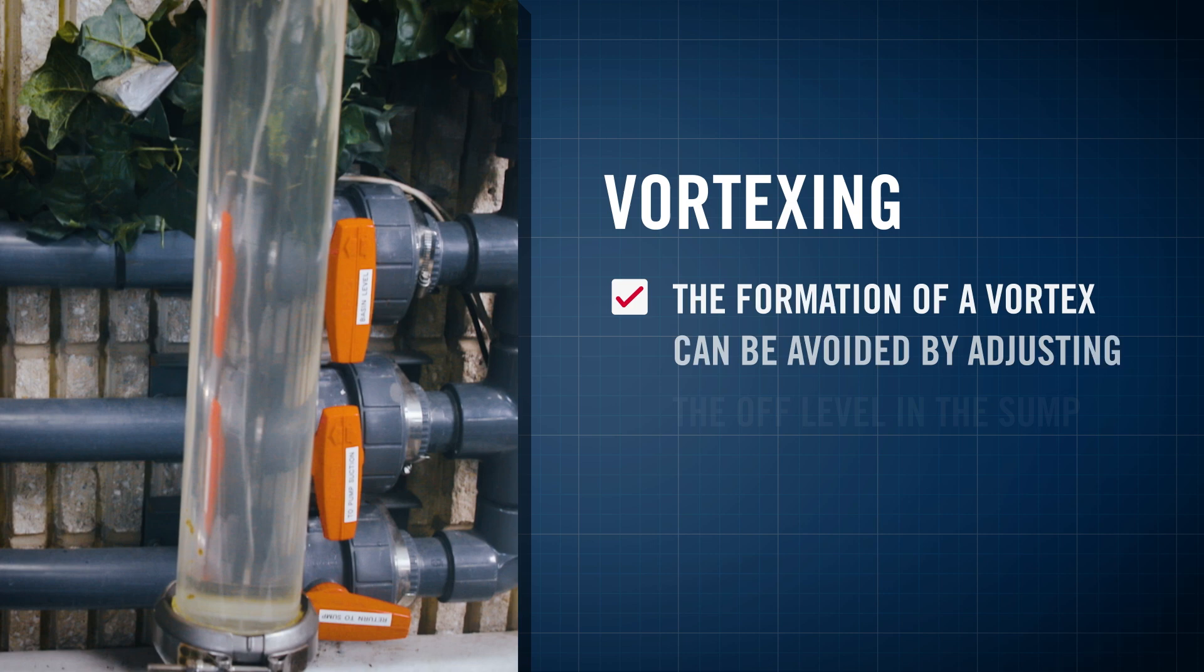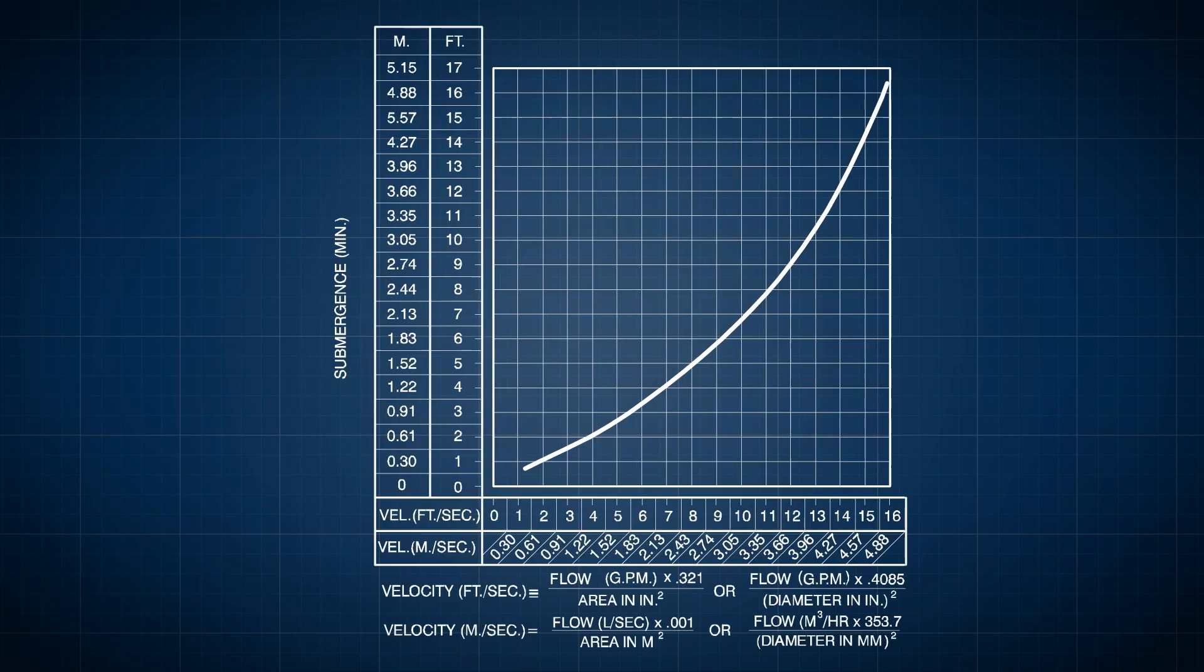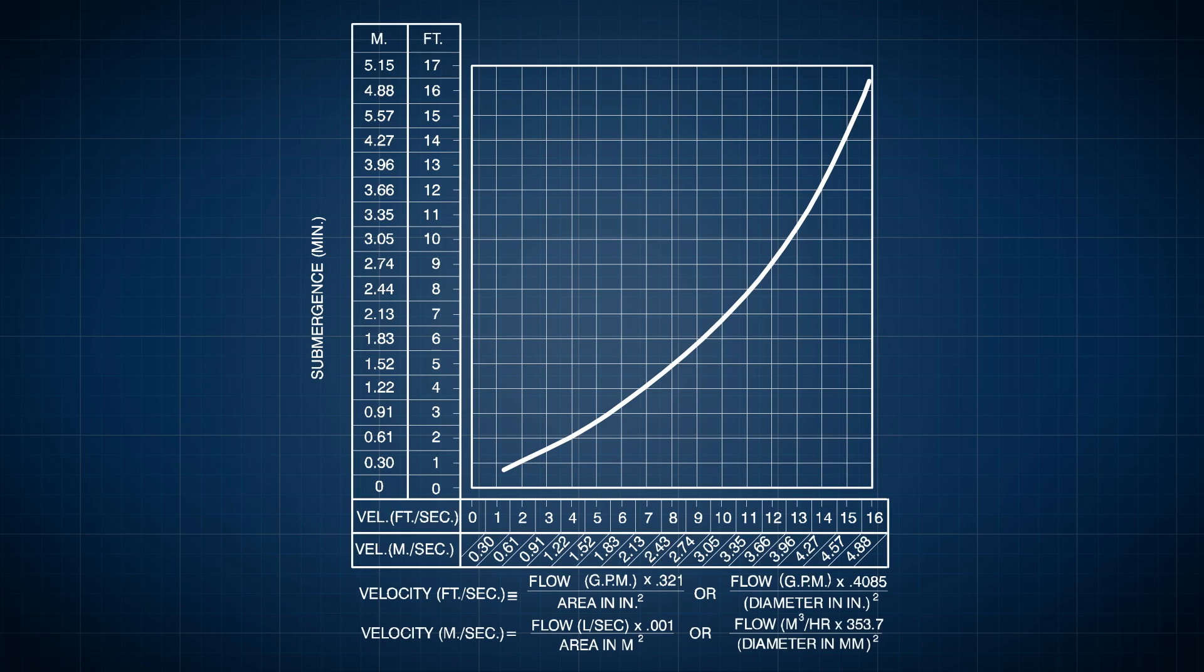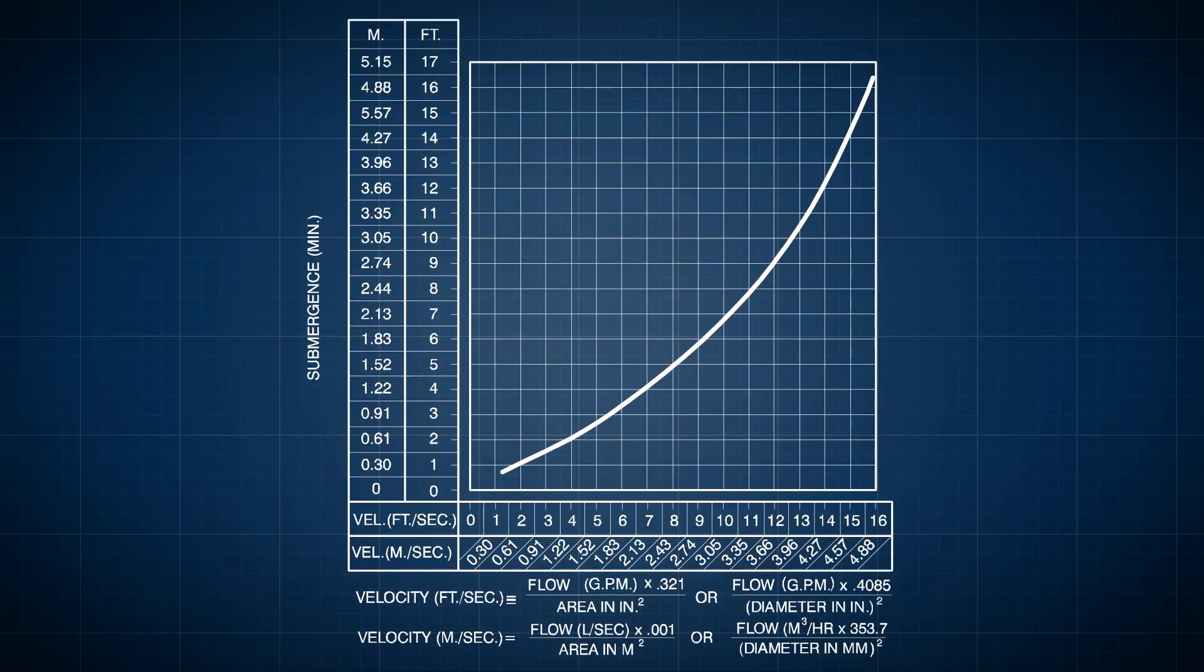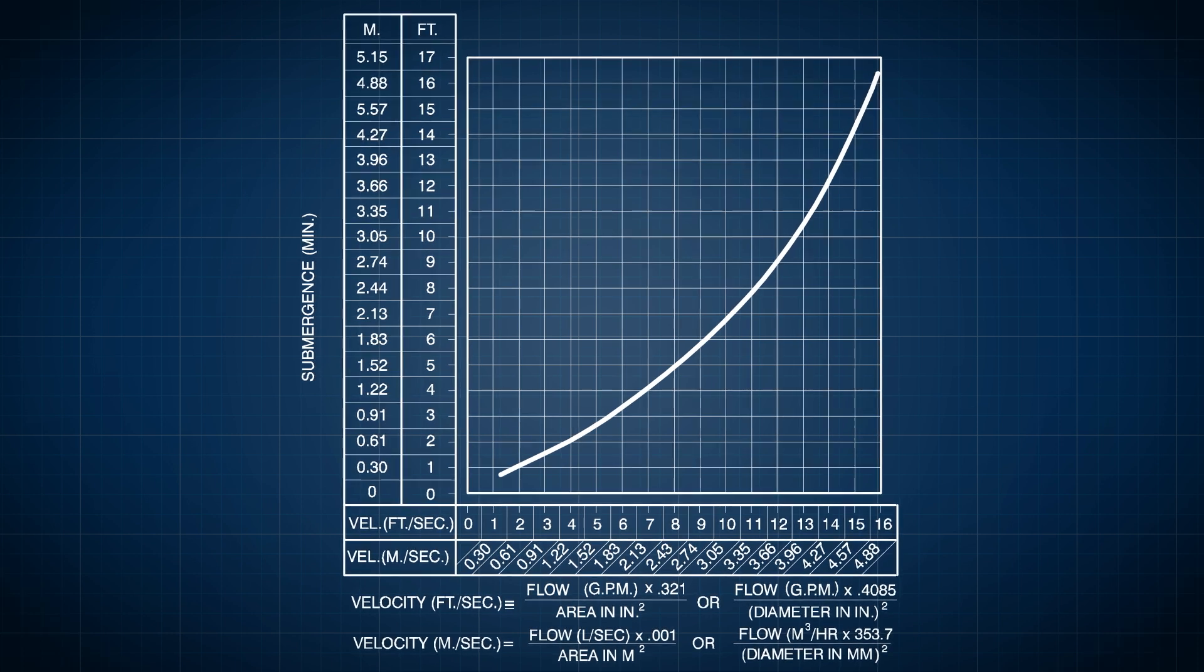The formation of a vortex can be avoided by adjusting the off-level in the sump. All Gorman-Rupp self-priming pump manuals include an easy-to-read chart that recommends the minimum submergence required to prevent a vortex from forming.